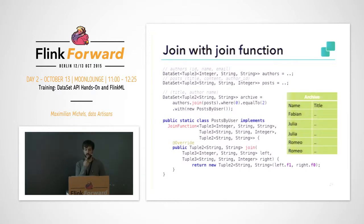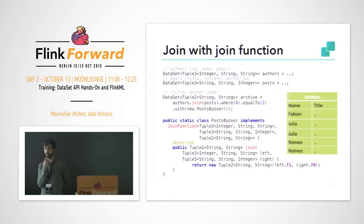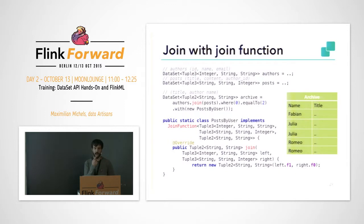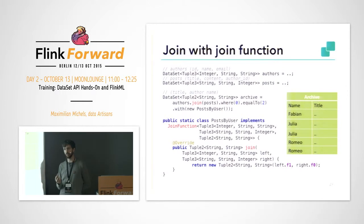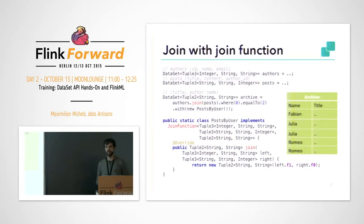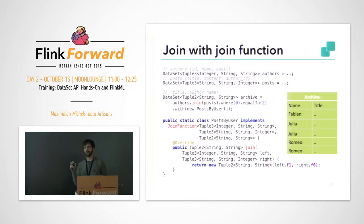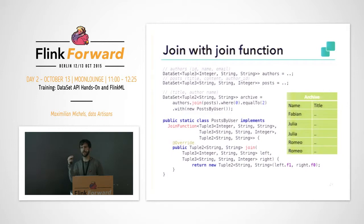The standard join in Flink is an equi-join, which would be like a left inner join in SQL. But you can implement all kinds of joins using a more generic transformation called co-group — you can read that in the documentation. Flink's join is always like this inner join, but there is also some support being merged in — in the next release there will also be a standard outer join, so you don't have to implement it yourself.